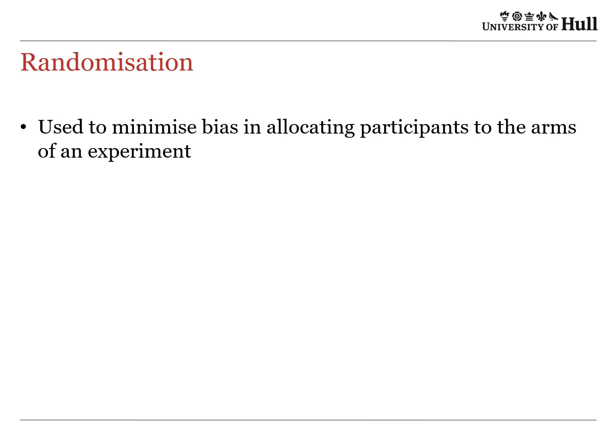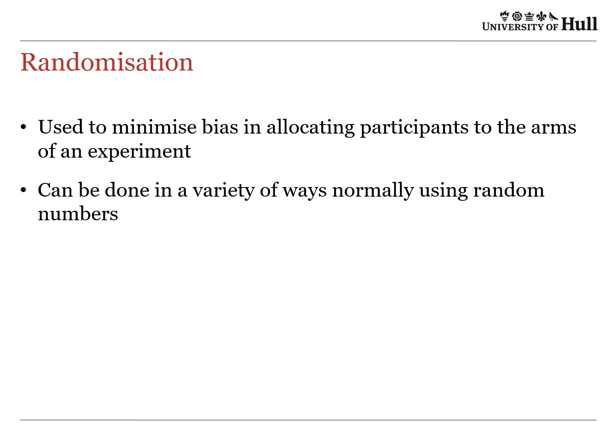Randomisation is used to minimise bias in allocating participants to the arms of an experiment. We don't decide how they get into that arm — this is decided on the basis of some random method, usually using random numbers generated by a computer. Each person in your study will be allocated a number, and then by some means you will generate those numbers randomly and select the people into the study when their number comes up.